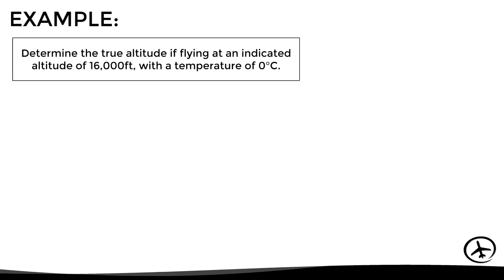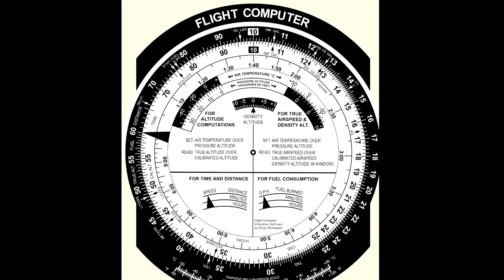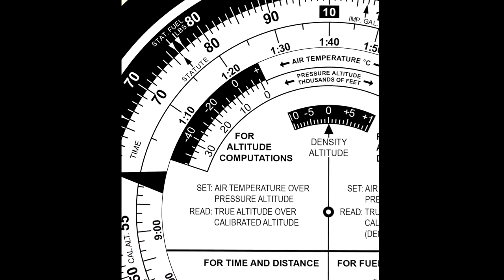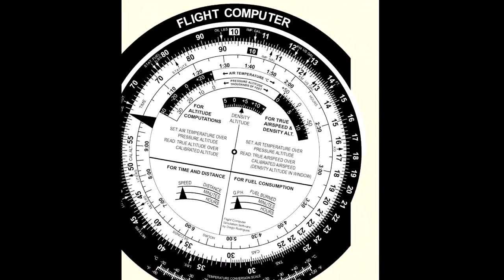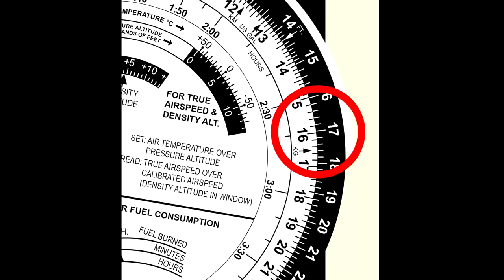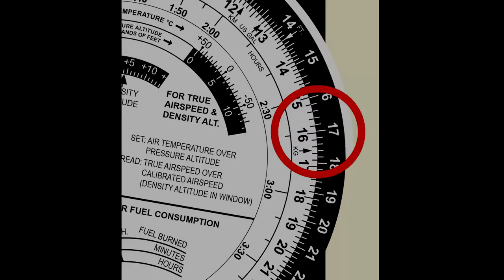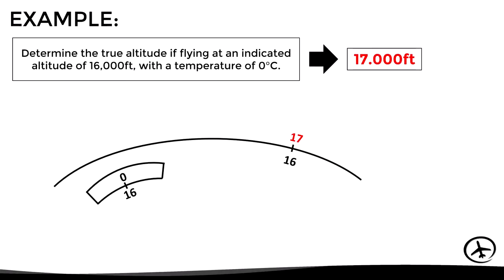Let's see a practical example. Suppose we want to determine the true altitude when flying at an indicated altitude of 16,000 feet with a temperature of 0 degrees Celsius. First, we have to align 16,000 feet with 0 degrees Celsius on this scale. Then we look for 16,000 feet in the middle scale and read the corresponding true altitude on the outer scale — in this case, 17,000 feet. This means that even though the altimeter is indicating 16,000 feet with the current QNH properly set, the aircraft is actually flying at 17,000 feet due to the relatively high temperature.